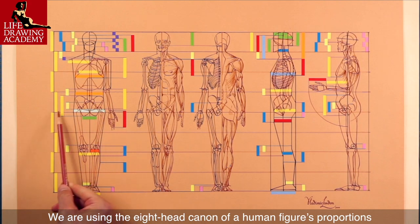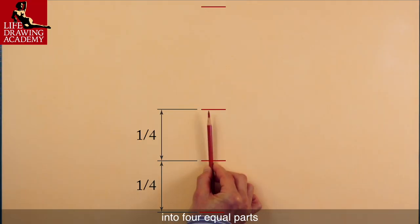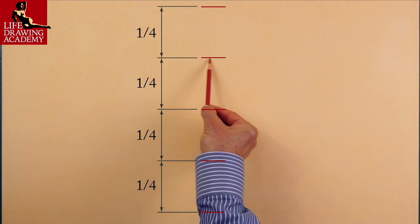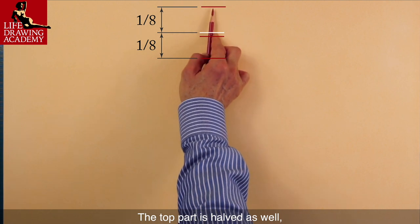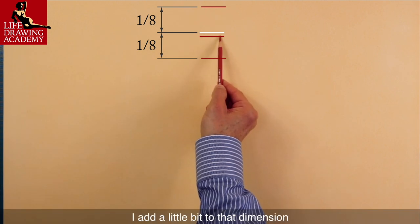We are using the eight-head canon of a human figure's proportions. This way we have divided the height of the figure into four equal parts by splitting each half into two equal parts. The top part is halved as well, giving us one-eighth of the figure. I added a little bit to that dimension.